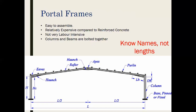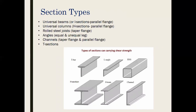Columns and beams are bolted together. Know the names of all parts, including eaves, haunches, purlin, apex, rafter, and the haunch at the top. Column bases can be pinned or fixed. Section types include the universal beam, which is an I-section, and the universal column, which is an H-section.